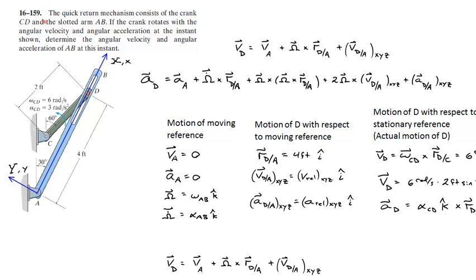Here's a relative velocity problem. What you're looking at is a link that's rotating in a counter-clockwise direction at a rate of 6 radians per second. There's a slot in this linkage AB, and point D is allowed to slide up and down in the slot as this thing rotates counter-clockwise.